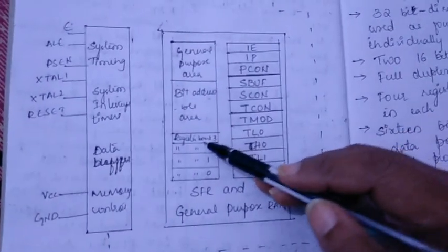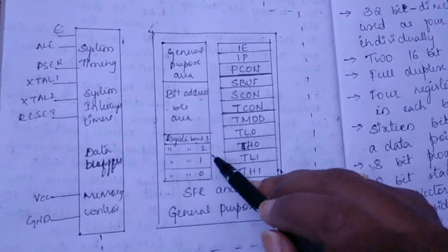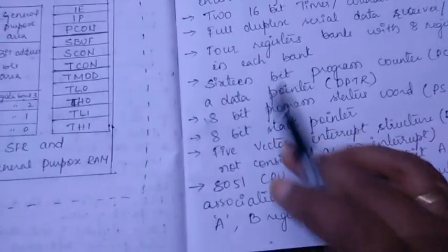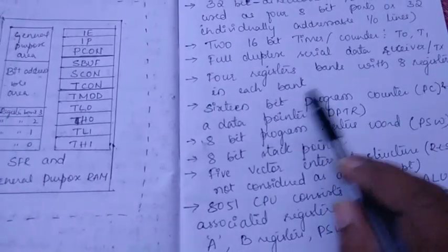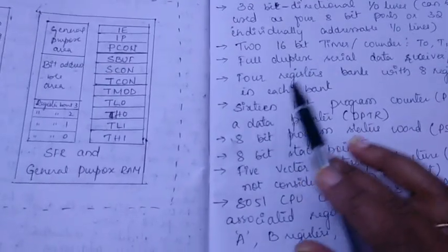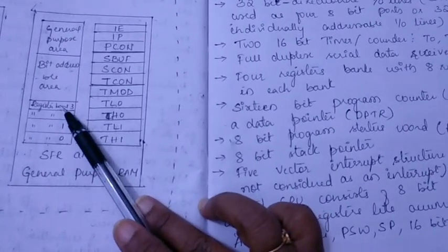You can see we have written here which I will explain. We have four register banks: bank 0, bank 1, bank 2, bank 3. There are four register banks with eight registers in each bank.